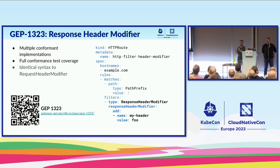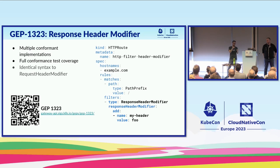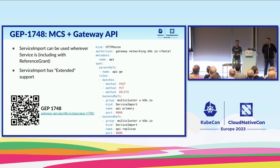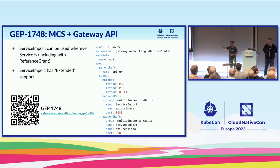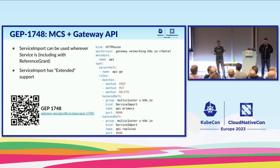Next up is response header modification — a notably missing feature that is graduating to standard. This works the same way as request header modifiers but allows you to modify response headers. Then we have GEP 1748, which talks about multicluster services and Gateway API — combining two of the newest Kubernetes networking APIs to do advanced routing across multiple clusters. We call the combined concept multicluster gateways.